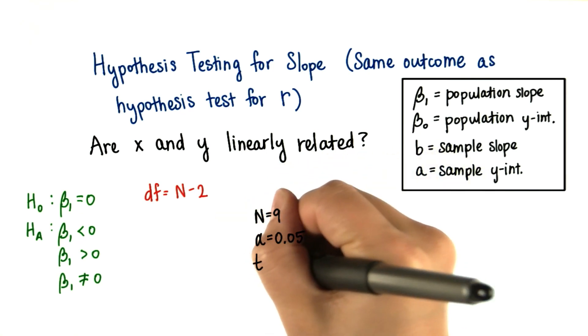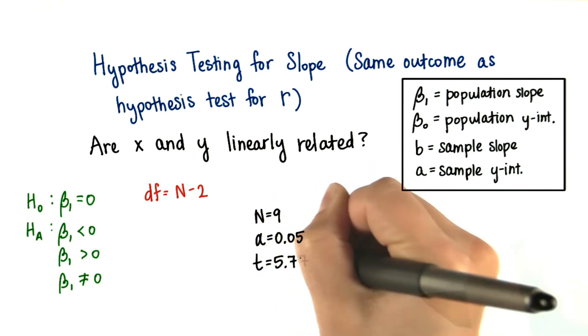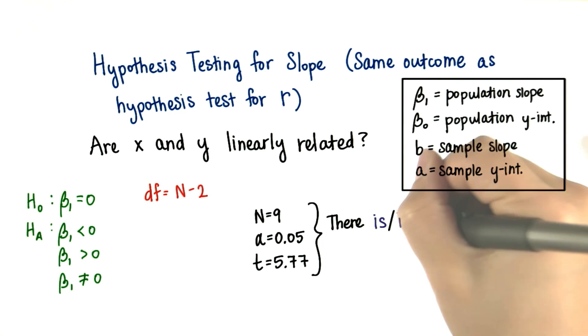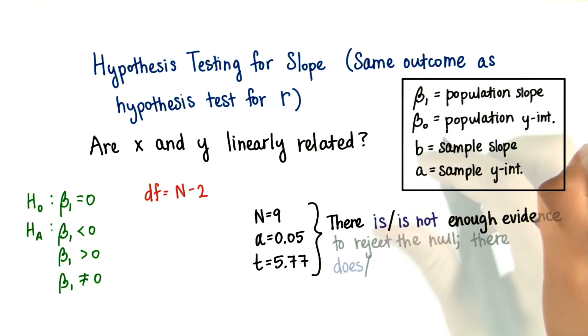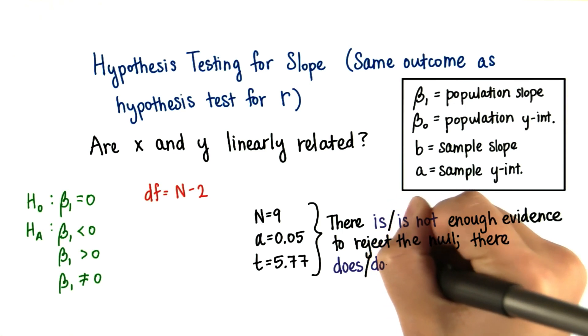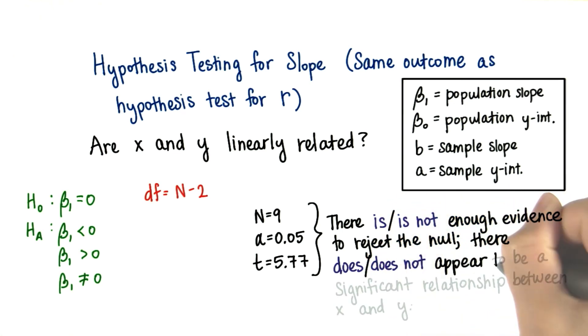And then let's say that we calculate our t-statistic, and we get 5.77. What can we conclude? There is, or there is not, enough evidence to reject the null. Meaning there does, or there does not, appear to be a significant relationship between x and y.